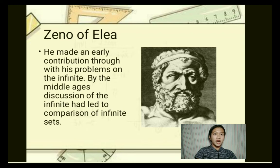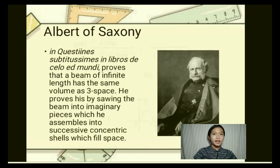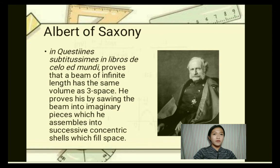By the Middle Ages, discussion of infinity had led to comparison of infinite sets. For example, Albert of Saxony proved that a beam of infinite length has the same volume as three-dimensional space. He proved this by sawing a beam into imaginary pieces, which he assembled into successive concentric shells, which filled space.